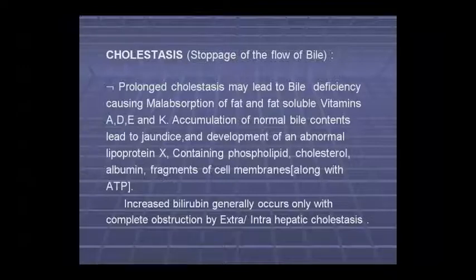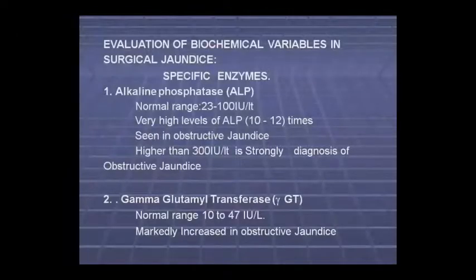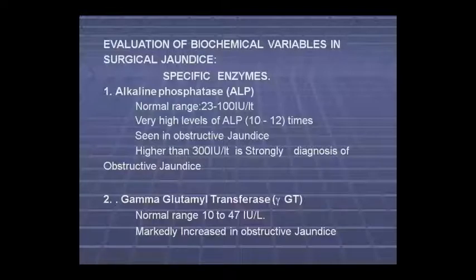When complete obstruction comes from extra-hepatic cholestasis, biochemically we can see it through alkaline phosphatase level, which is increased. The normal range is 23–100 IU per liter. It will increase 10–12 times, indicating obstructive jaundice, showing values around 300 IU.